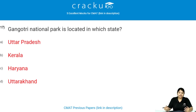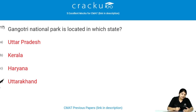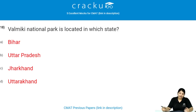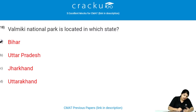Gangotri National Park is located in which state? Gangotri National Park is located in Uttarakhand state and is famous for trekking. Valmiki National Park is located in which state? Valmiki National Park is located in Bihar state.